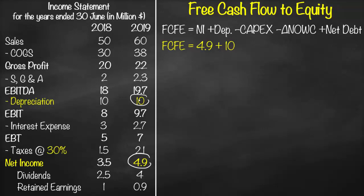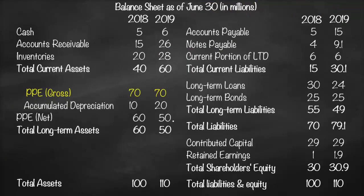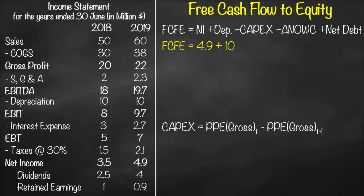To calculate CapEx we have two methods. The first uses gross property, plant and equipment (PP&E) — use gross, not net. The formula is: gross PP&E at the current year minus gross PP&E at the previous year. From the balance sheet, gross PP&E in 2019 is 70 minus 2018's 70, so CapEx equals 70 minus 70, which equals zero.